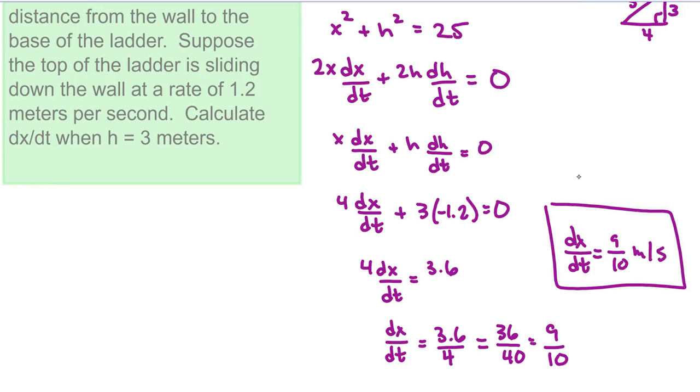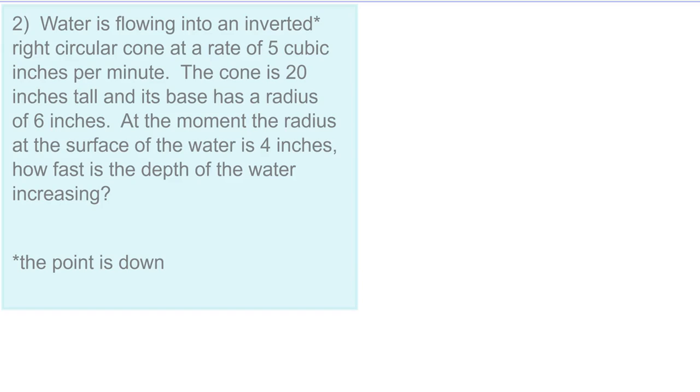How did you do? Okay, let's go on to number 2. Water is flowing into an inverted right circular cone at a rate of 5 cubic inches per minute. The cone is 20 inches tall and its base has a radius of 6 inches. At the moment the radius at the surface of the water is 4 inches, how fast is the depth of the water increasing? So an inverted cone has a point down. And go ahead and pause and then resume when you're ready to check your work.